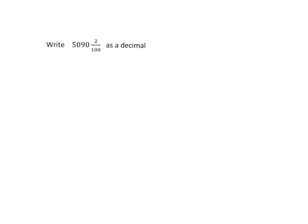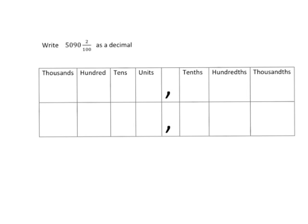Another quick example: if we're asked to write 5090 + 2/100 as a decimal, again, quick and easy if we just put everything into their place values.